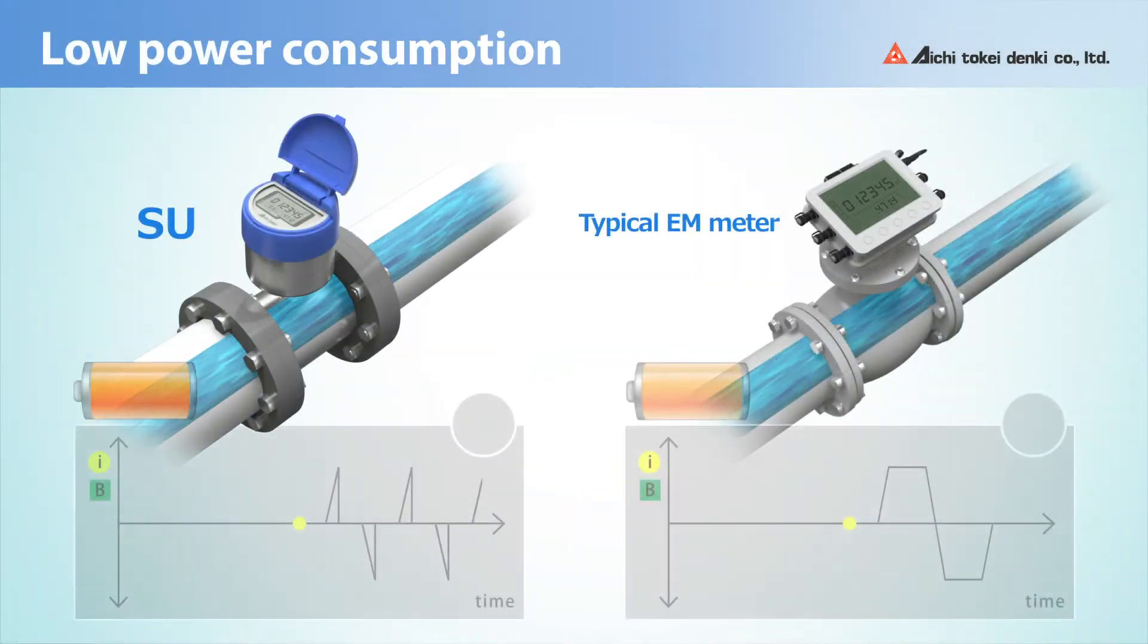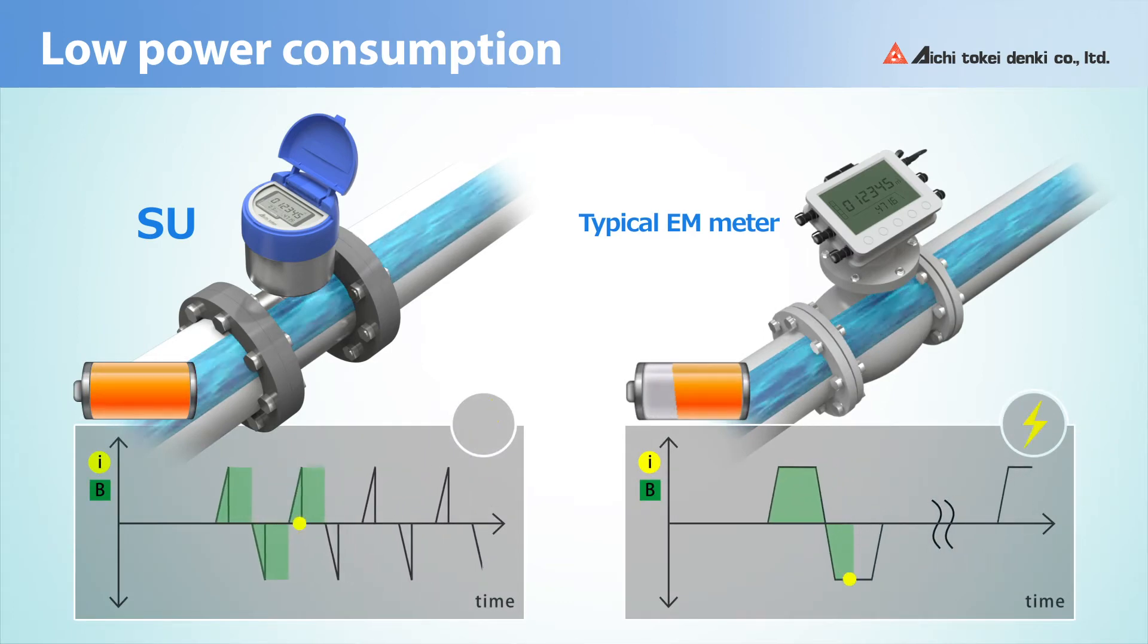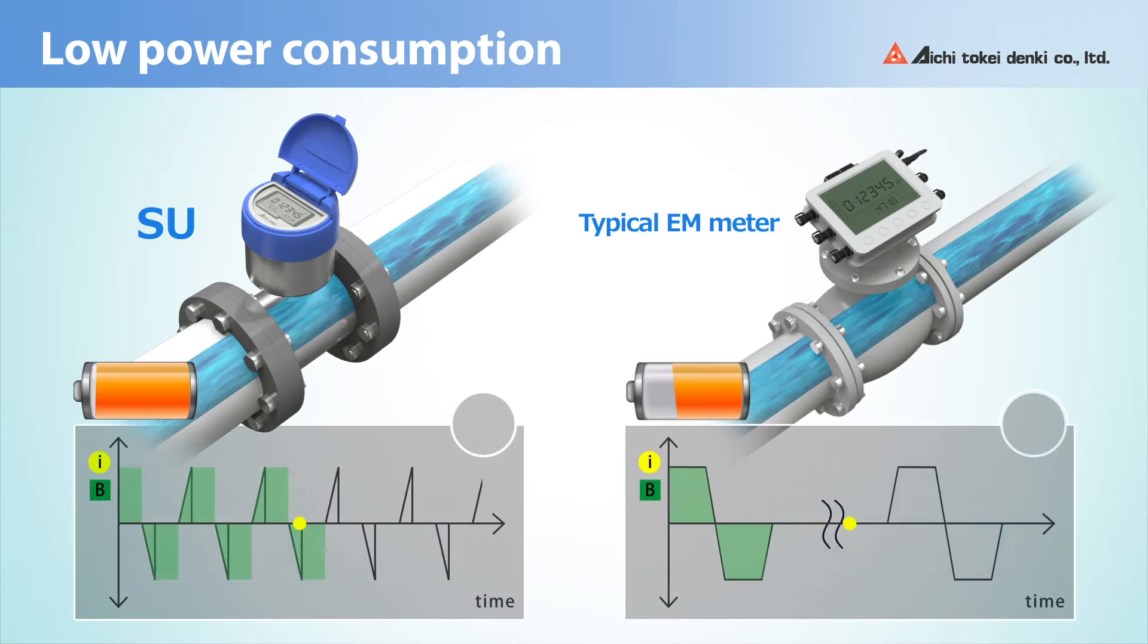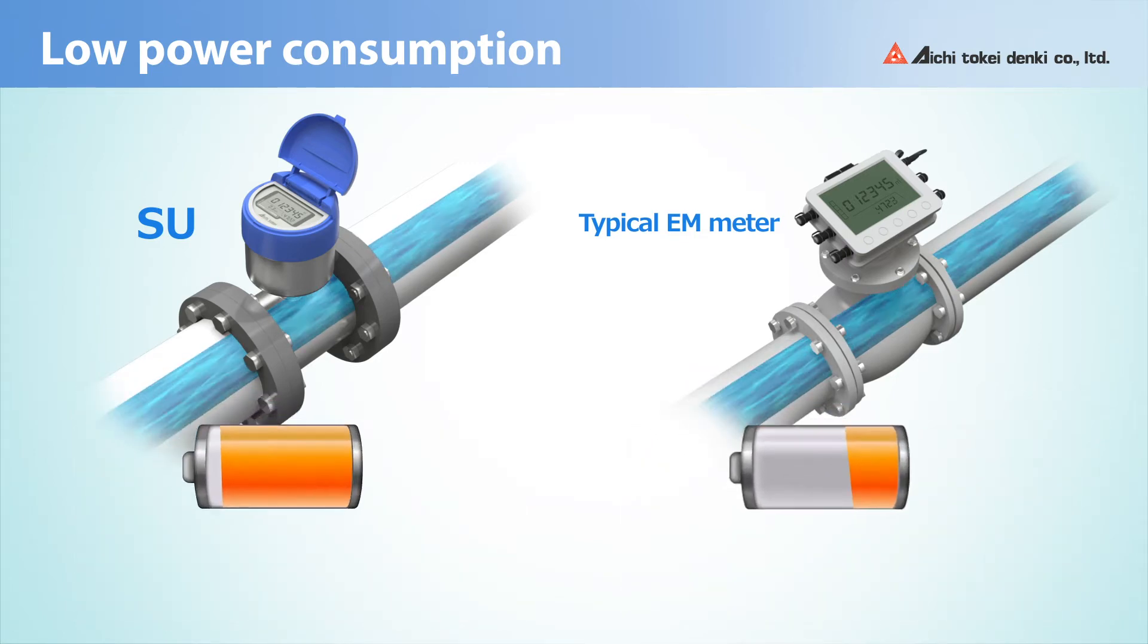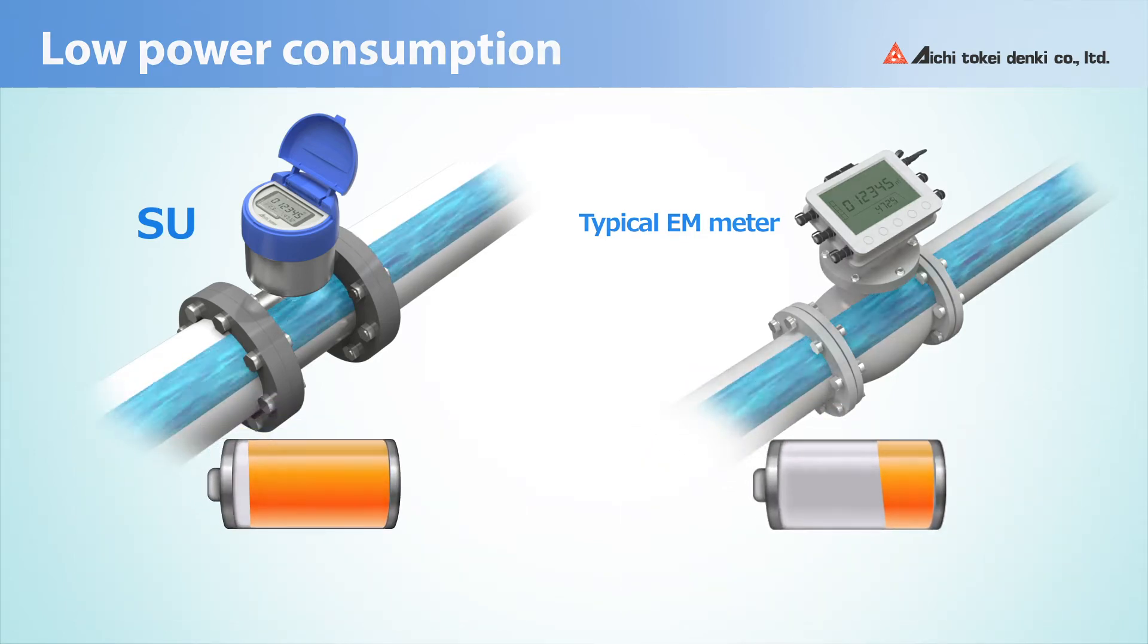Using this remnant magnetic technology, Aichi Tokei Denki developed the world's first battery-powered electromagnetic meter with high accuracy and very low power consumption.